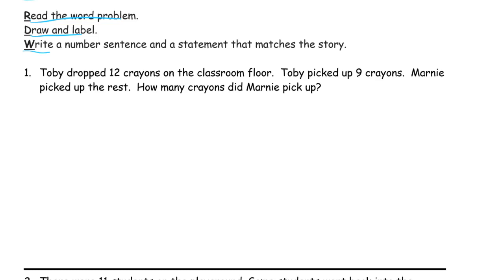Toby dropped 12 crayons on the classroom floor. Toby picked up 9 crayons. Marnie picked up the rest. How many crayons did Marnie pick up? Let's just draw the picture first and then figure it out later. So Toby dropped 12 crayons. So let's draw the 12 crayons. 1, 2, 3, 4, 5, 6, 7, 8, 9, 10, 11, 12.